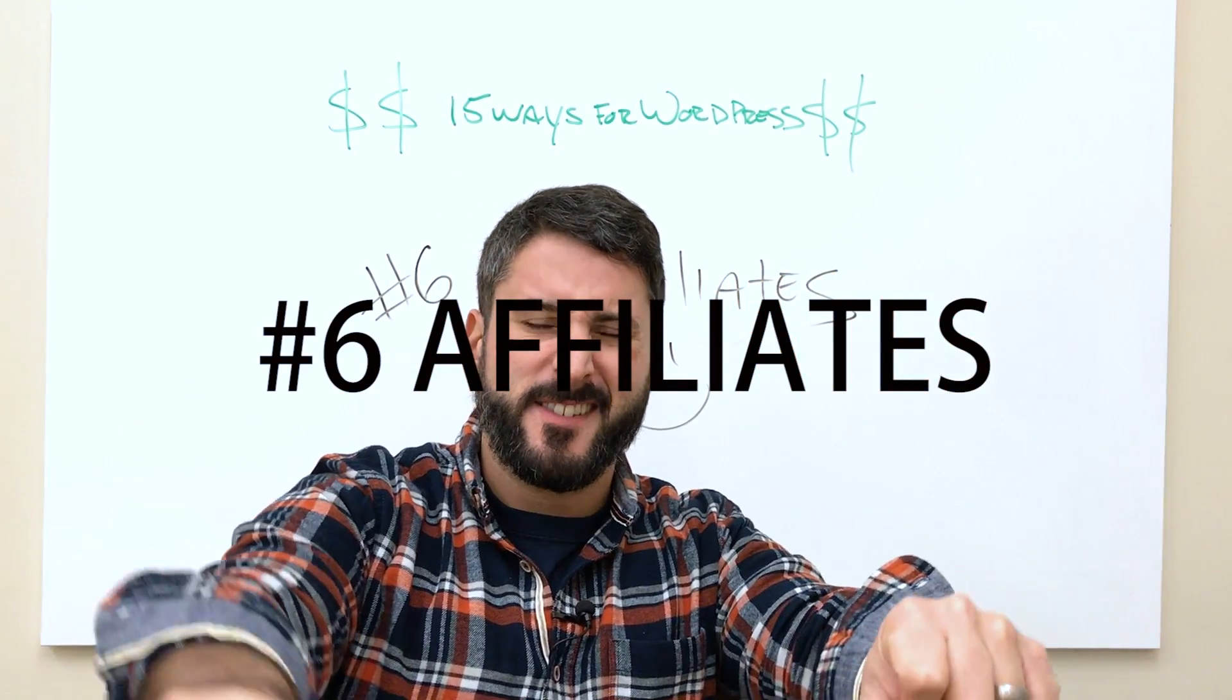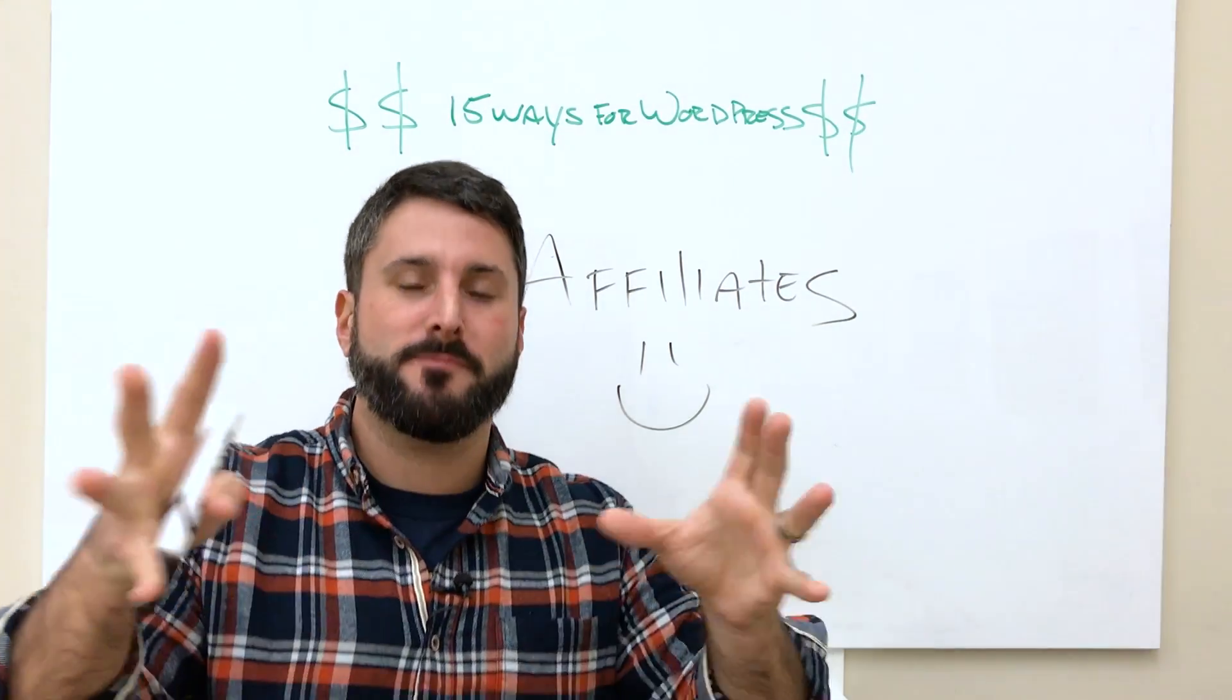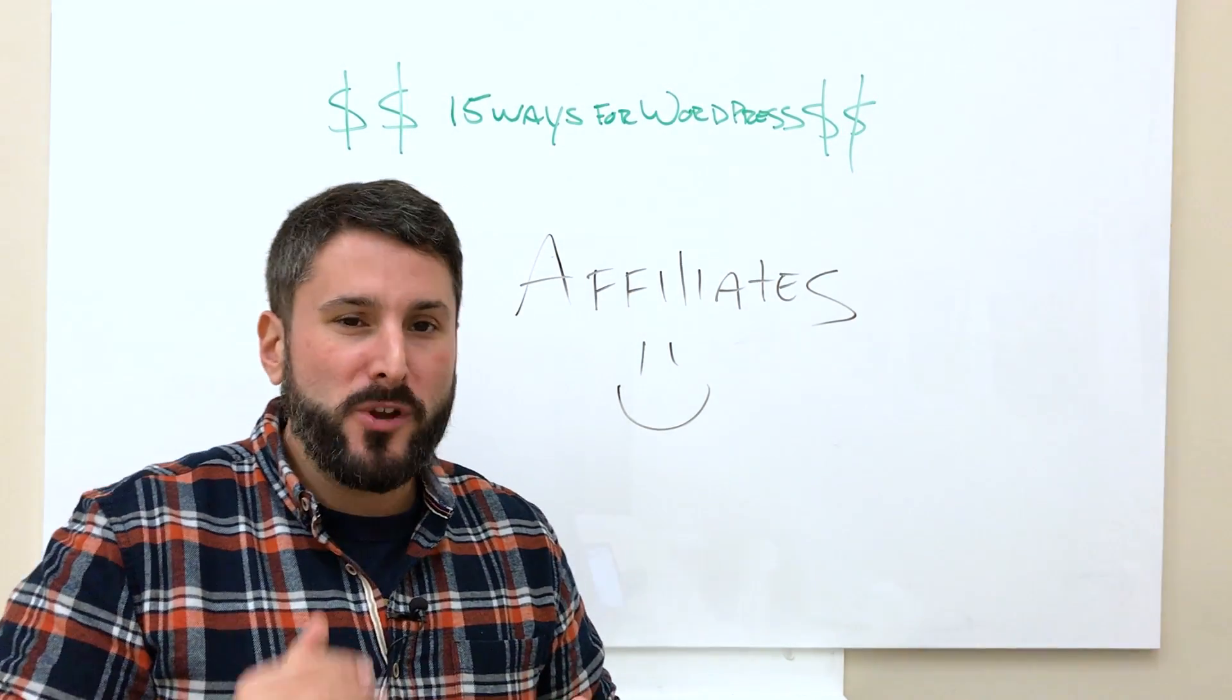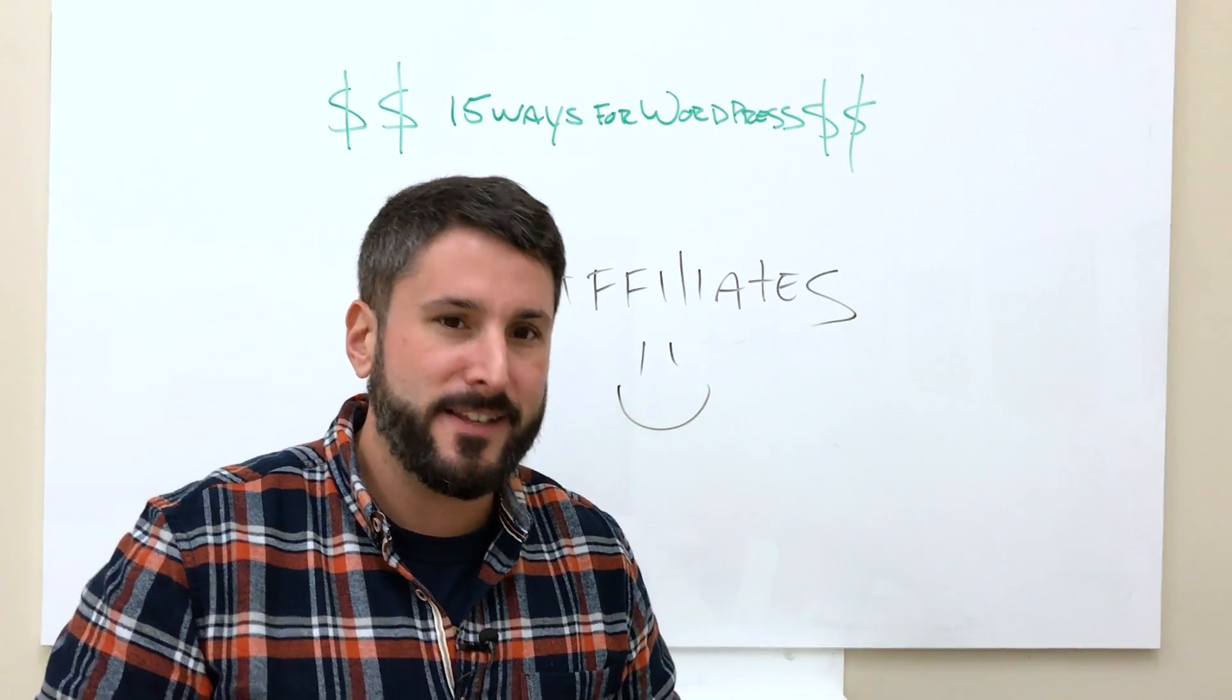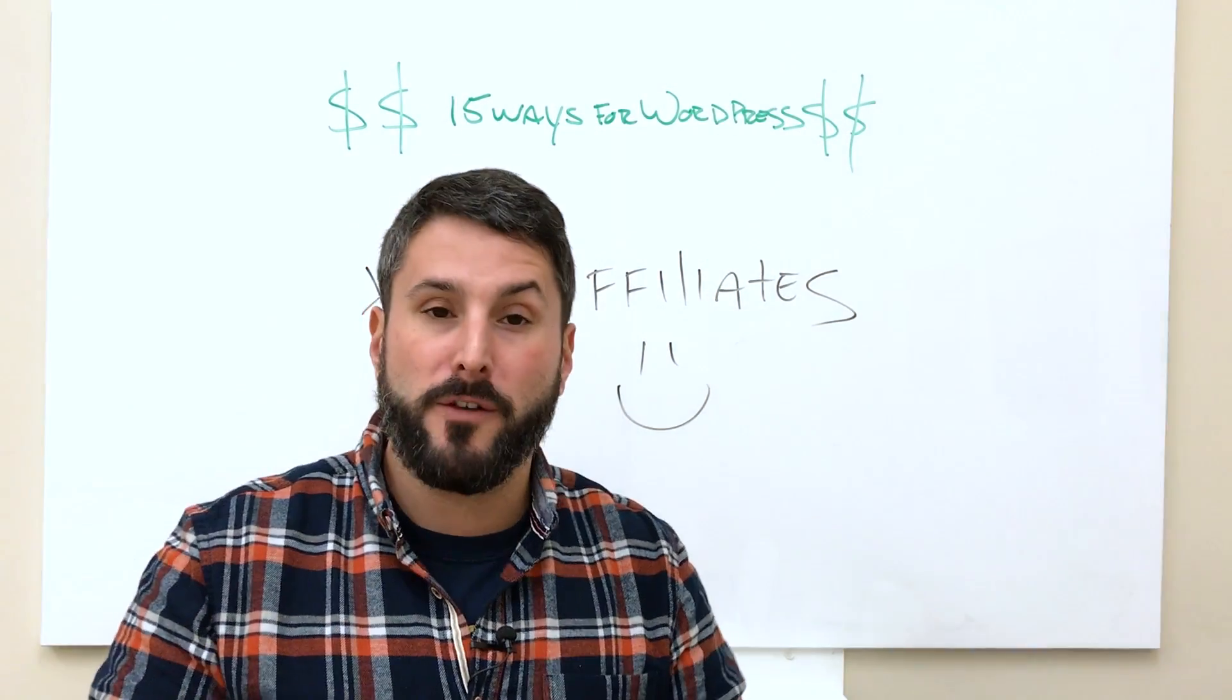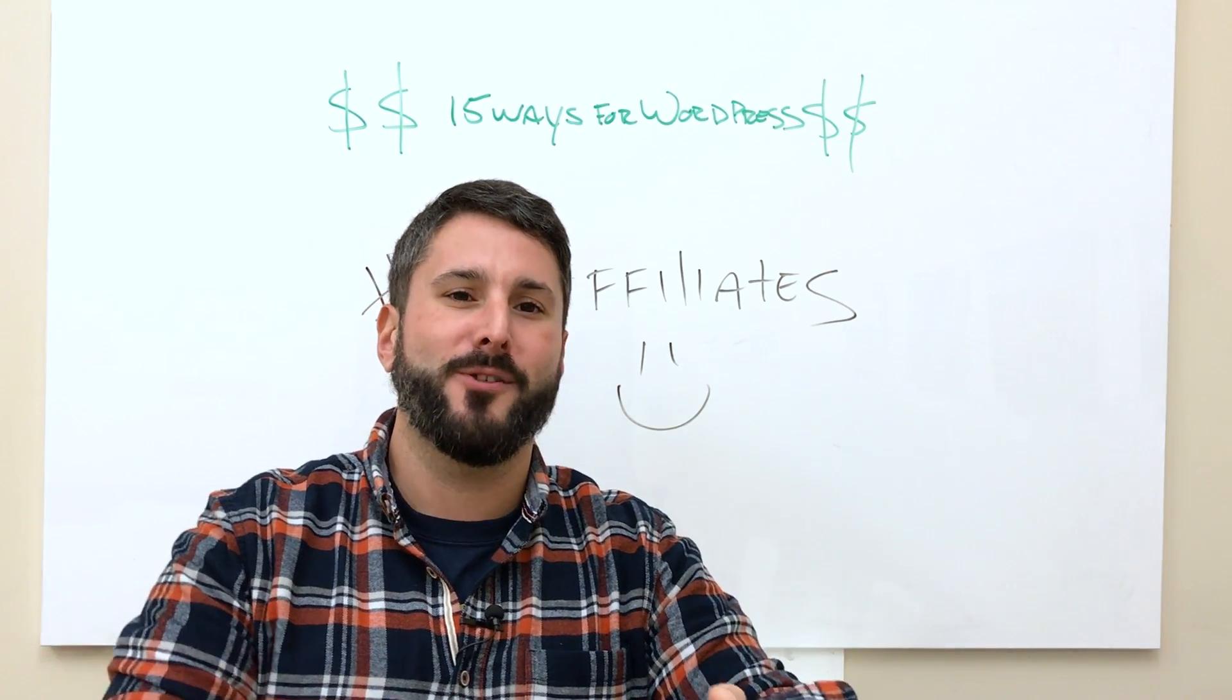Number six, affiliates. Make some affiliate income recommending other WordPress products and services. This is probably one that really makes people cringe a little bit, even myself included. Because it's a very hard market to really break into. You really need a lot of traffic to get affiliate sales really working for you in this channel.